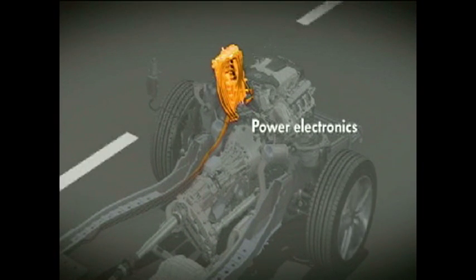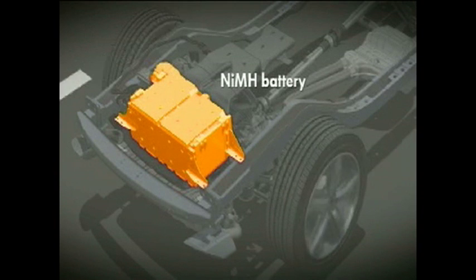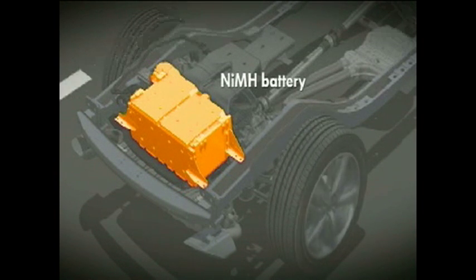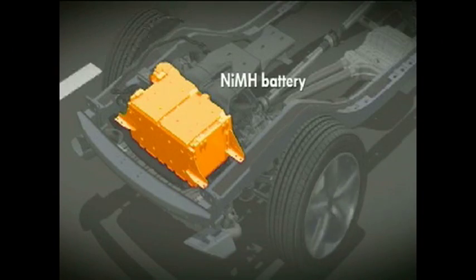The intelligent power electronics ensure that the correct current flows at all times, both when driving with the electric motor and when charging the battery. The electric motor gets the necessary voltage from the high-voltage battery. When the driver brakes, the kinetic energy is recovered and stored here.